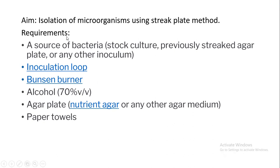For this experiment, we require a bacterial source as an inoculum — a soil sample can also be used. We need an inoculation loop, a Bunsen burner, alcohol for sterilizing your work area, a nutrient agar or any other agar medium plate, and paper towels.